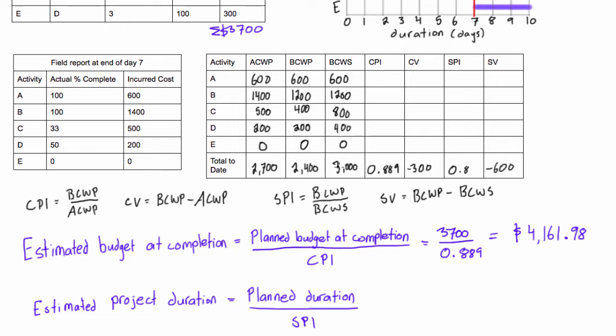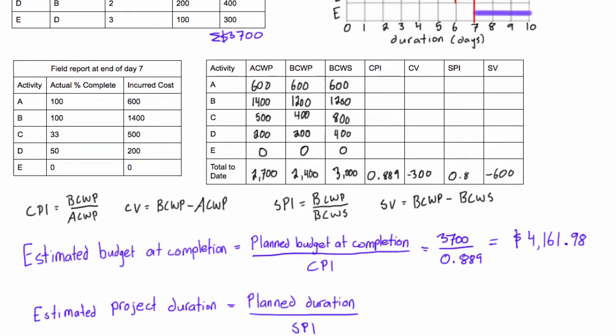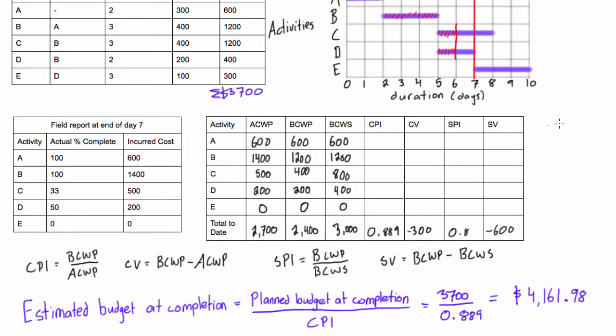So we already know at this point, when we are looking at our project at the end of day 7 when our progress report came in, based on our CPI and CV that we are currently over budget. So if we continue on this path, we'll end up having the whole project cost $4,100, which is more than $3,700. We definitely will be finishing, if we keep at this rate, the project over budget.